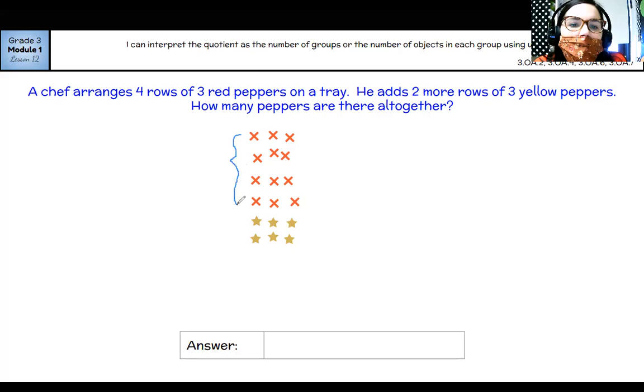This is the distributive property. So I have four times three here, which is going to equal three, six, nine, 12. Four times three equals 12.